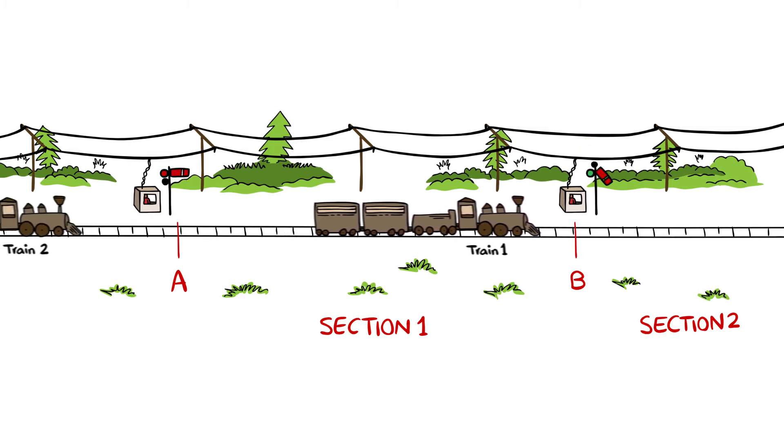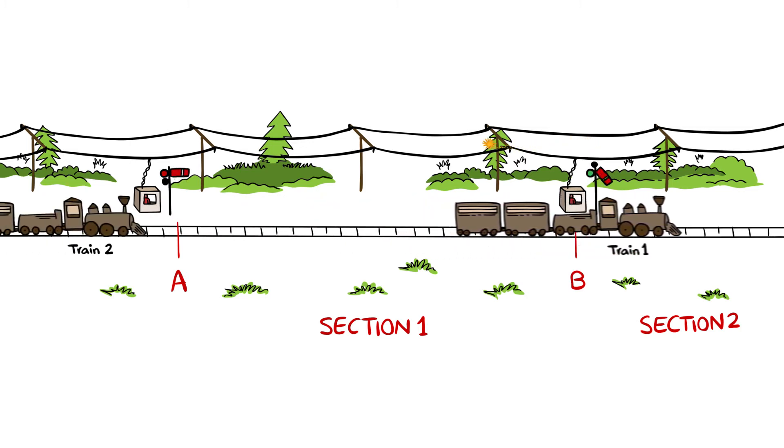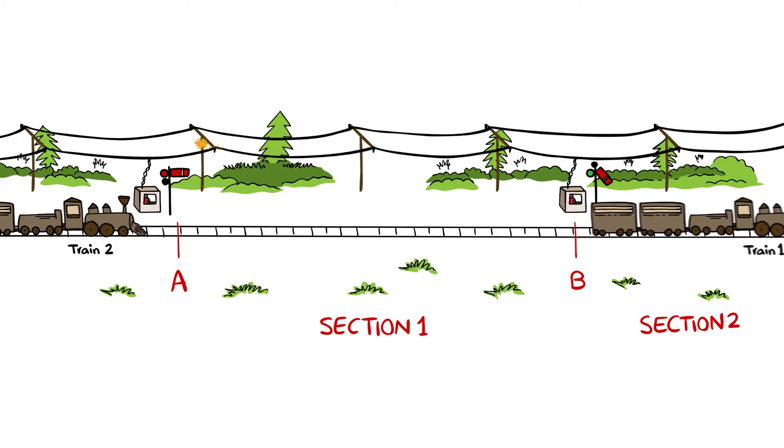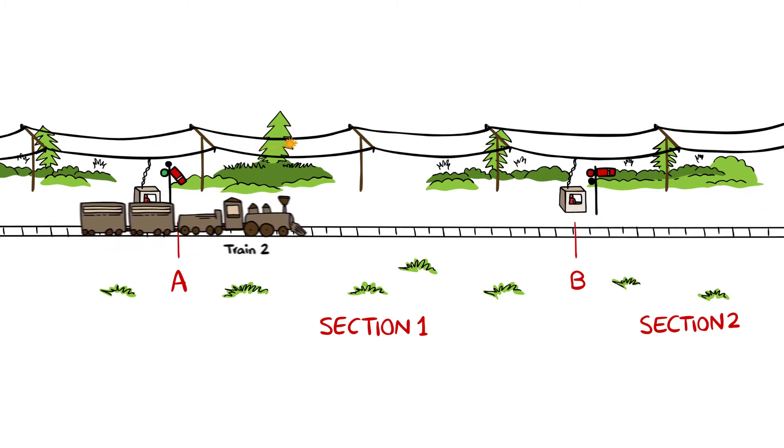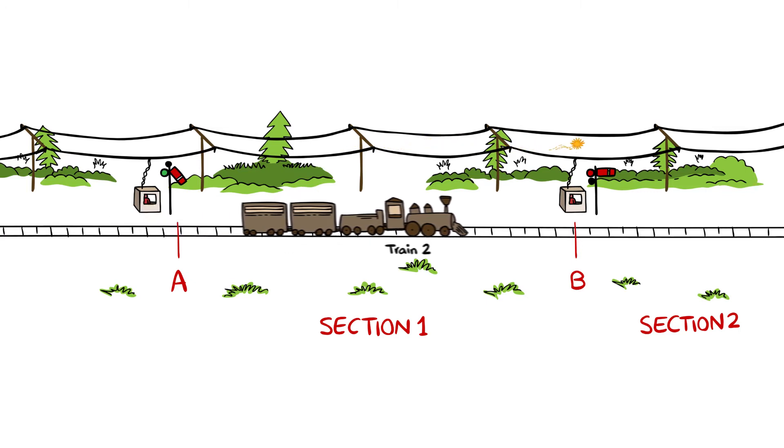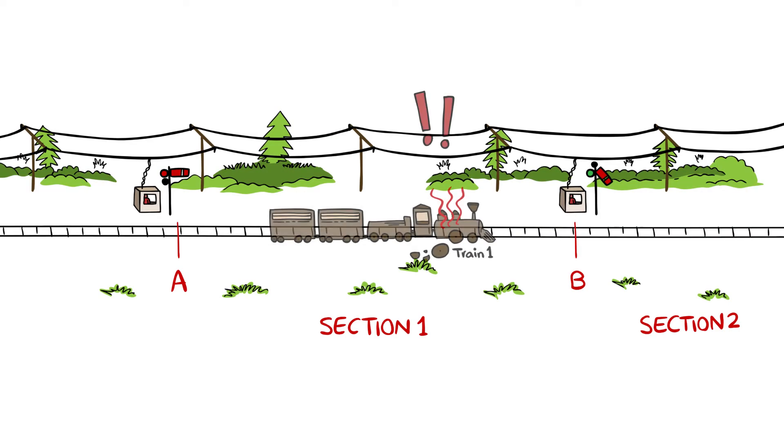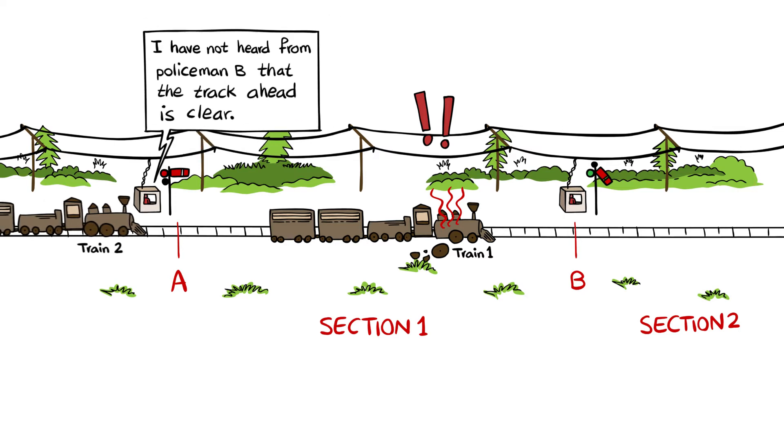When the train exits track section 1, Policeman B telegraphs Policeman A indicating that train 1 has passed track section 1 and Policeman A allows train 2 to enter the same track section. If Policeman A does not receive a telegraph from Policeman B indicating train 1 has passed track section 1, Policeman A prevents train 2 from entering that same track section.